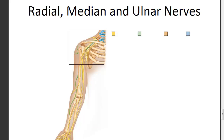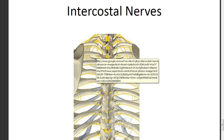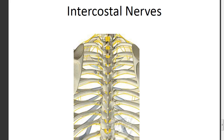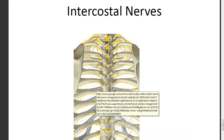In between the ribs, we have the intercostal nerves that serve the muscles over the ribs, exiting directly from the spinal cord. There is no plexus associated with these nerves, but they are important because they help support breathing.